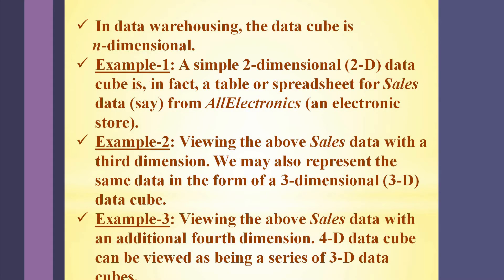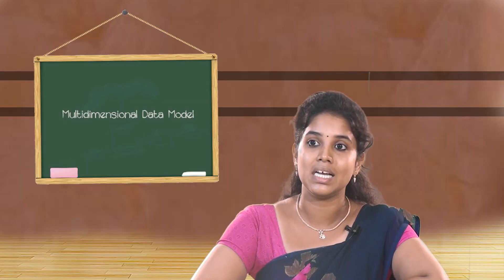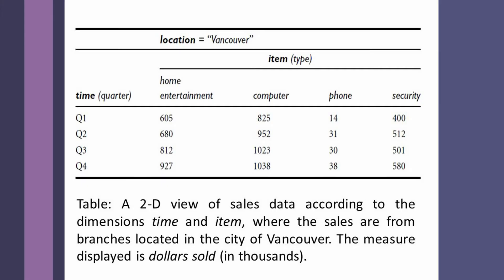The data cube in a data warehouse is n-dimensional. Let us consider a two-dimensional data, which can be viewed in the form of a table. In this example, there are two dimensions: time, expressed in terms of quarters Q1, Q2, Q3, and Q4; and item types, expressed in terms of home, entertainment, computer, phone, and security. The numerical measures represent the dollars sold in thousands, and this data belongs to the location Vancouver.